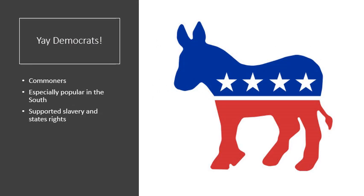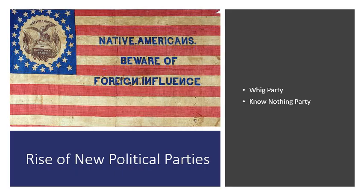Andrew Jackson's Democratic Party became the party of the commoners, especially popular in the South where Jackson was from. They supported slavery and states' rights, thinking the national government should stay out and states should have more power. New political parties began to rise in the aftermath — two of these were the Whig Party and the Know Nothing Party. The Know Nothing Party was a single-platform party that rose from the nativist movement and really opposed immigration, particularly Irish and German immigration. The Whig Party rose in opposition to the Democrats, tending to align with Northerners and wealthy industrialists, filling the void left by the Federalists.